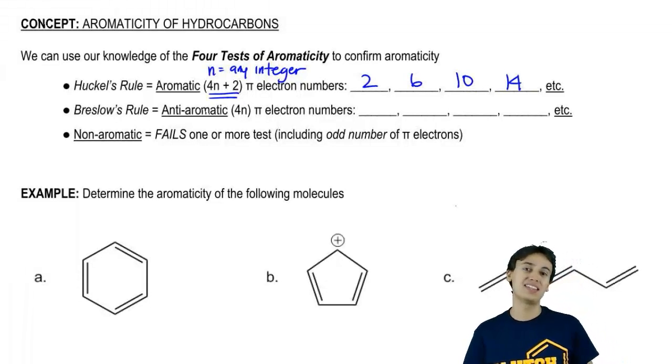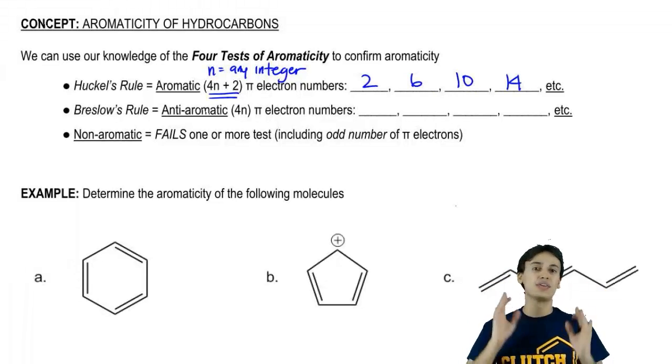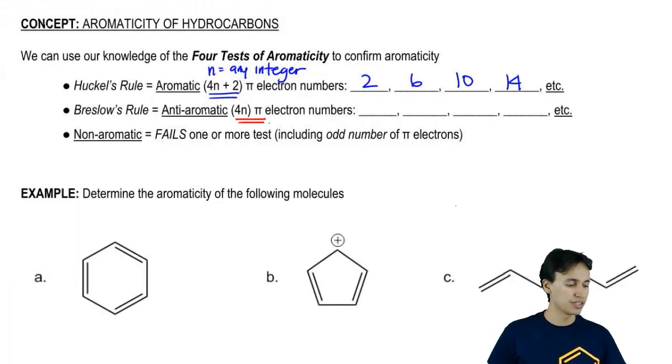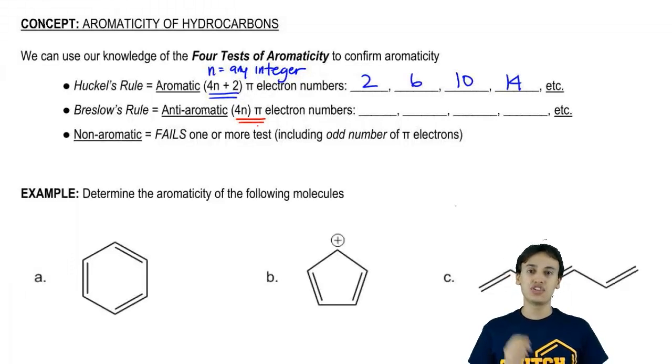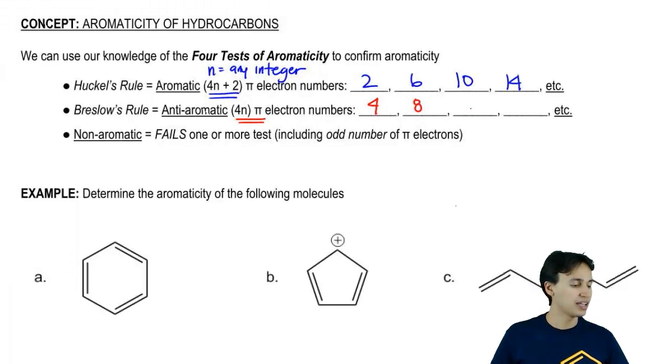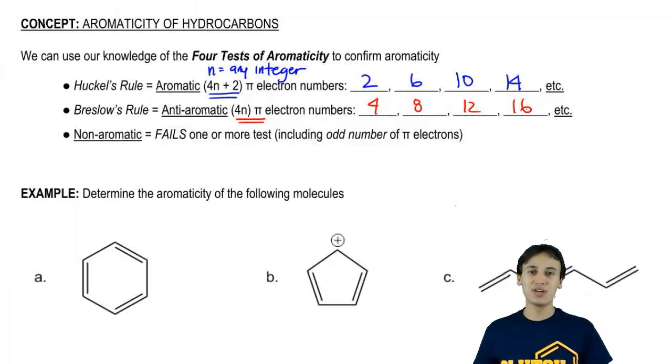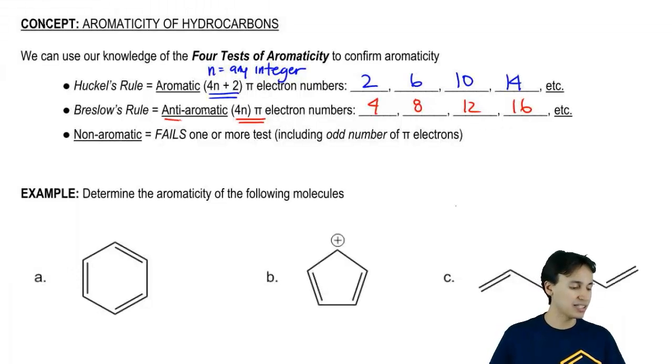Then remember that we had this other category which was let's say that you meet the first three tests but we get a 4n number of pi electrons. These are different numbers. These are going to be the multiples of four. These are going to be numbers like 4, 8, 12, 16. Guess what? These are magical numbers as well but they're magical in a bad way. They suck. They make the molecule super unstable. In fact, it's really hard to even synthesize these molecules in the lab because they are so unstable. These molecules are going to be what we call anti-aromatic.